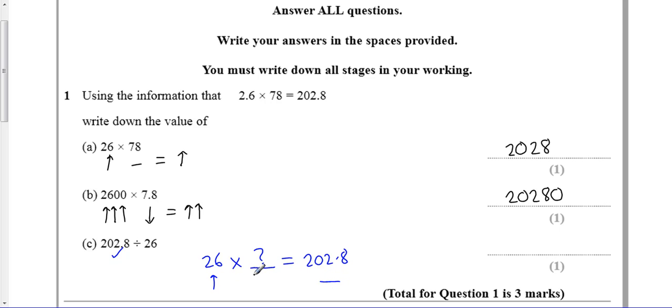Well, what do I have to do to put it here, to get the answer the same as the answer up here? If this one's 10 times bigger, this one's going to be 10 times smaller. So my answer's got to be 7.8.